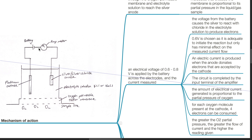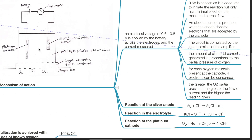An electric current is produced when the anode donates electrons that are accepted by the cathode. The circuit is completed by the input terminal of the amplifier. The amount of electrical current generated is proportional to the partial pressure of oxygen. For each oxygen molecule present at the cathode, four electrons can be consumed. The greater the oxygen partial pressure, the greater the flow of current and the greater the reading given.